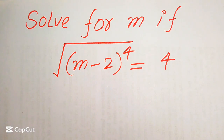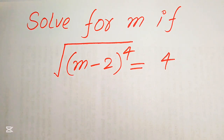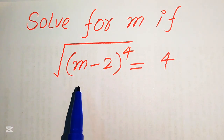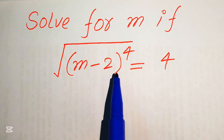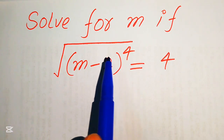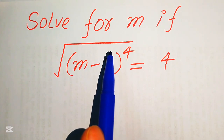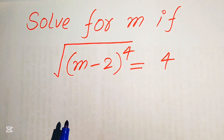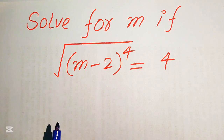Hello everyone, welcome to solve this nice math olympiad algebra problem. Here we have the square root of (m minus 2) to the power of 4 equals 4, and we solve this problem for the values of m.